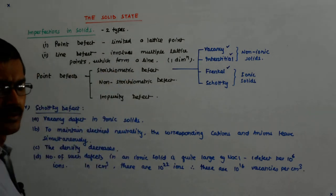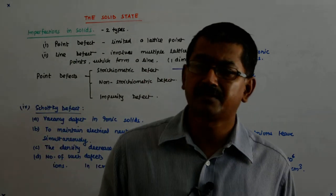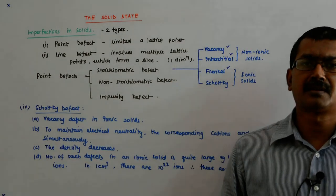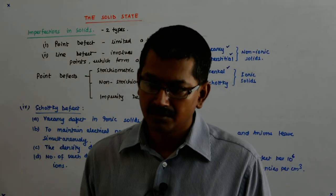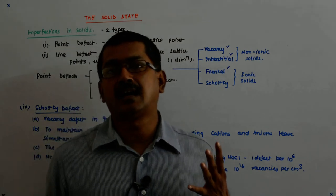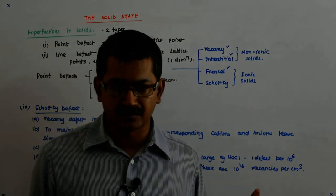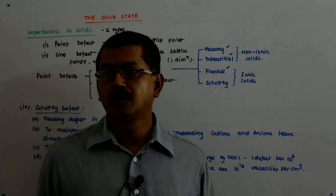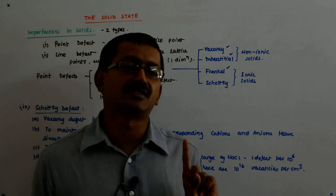Huge number. 10 to the power 16 is how much? 10 to the power 9 is a billion. 10 to the power 12 is a trillion. So there will be 10,000 trillion, 10,000 trillion defects in one centimeter cube.